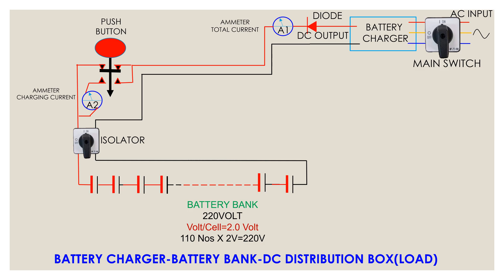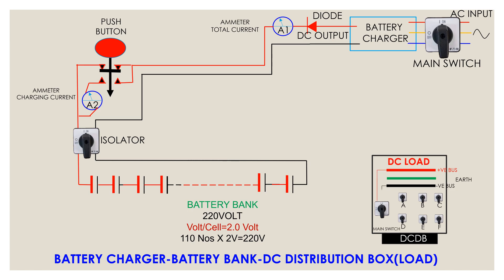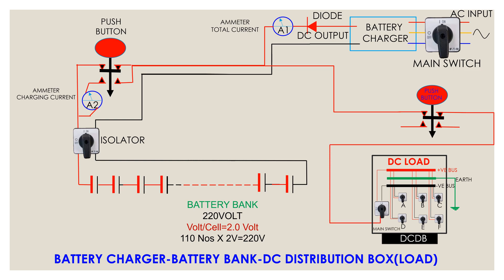When AC supply at the substation is available, the charger is used to charge the battery simultaneously to meet substation loads. This push button is used to meet substation loads, and the load current at that moment is shown through ammeter A3.